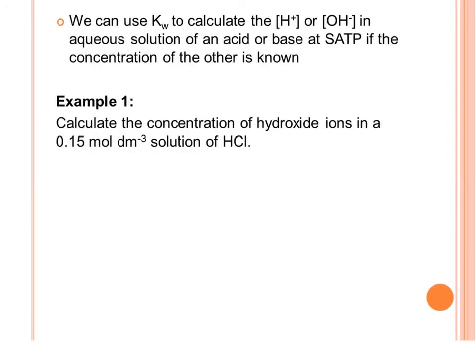We can use Kw to calculate the H⁺ or OH⁻ concentrations in aqueous solution of an acid or base if the concentration of the other is known. In the first example, calculate the concentration of hydroxide ions in a 0.15 mol/dm³ solution of HCl.